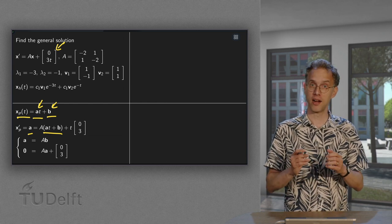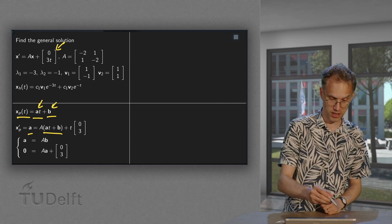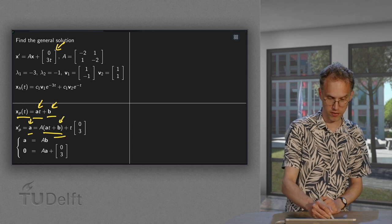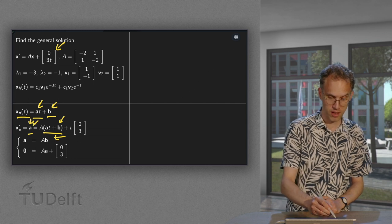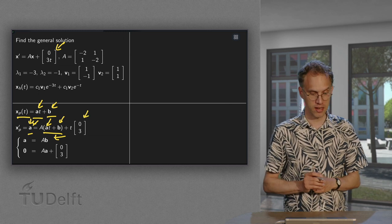Now, we are going to compare the terms with and without t. So, terms without t are the a here and the A times b over there. So, there we are. And the terms with a t: here we have a 0, here we have A times a, and here we have the vector (0, 3).